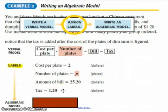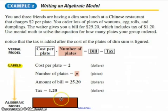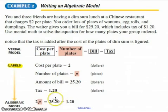So now, changing that to an algebraic model, you end up simply removing that brown box there and seeing that it's 2 times P, or in other words 2 for cost, P for plates, is equal to 25.20, in other words the bill, minus 1.20, in other words the tax.